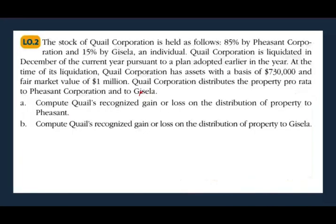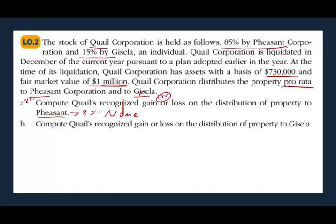Let's look at the next example. The stock of Q Corporation is held 85% by a corporation (Pheasant) and 15% by Giselle, an individual. Q Corporation is liquidated in December of the current year, pursuant to a plan adopted earlier in the year. At the time of liquidation, Q Corporation has assets with a basis of $730,000 and a fair market value of $1,000,000. Assets are distributed pro-rata — 85% to Pheasant and 15% to Giselle. Compute the recognized gain or loss on the distribution to Pheasant. Pheasant owns 85%, so the answer is: there's a gain, but we don't recognize it.